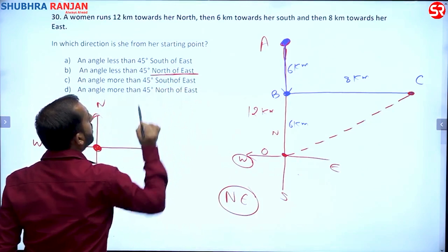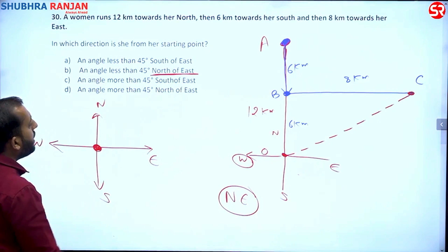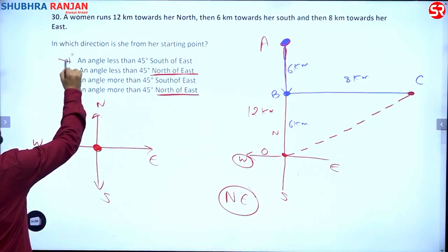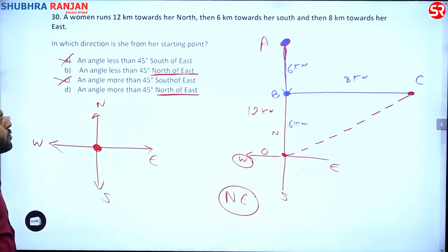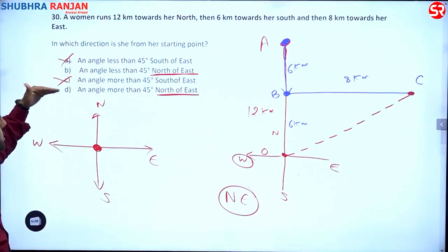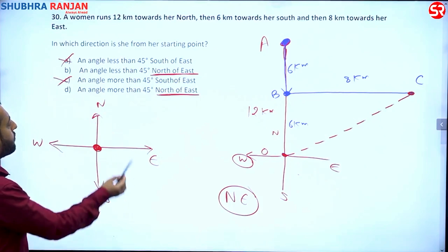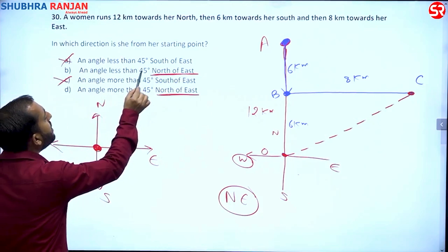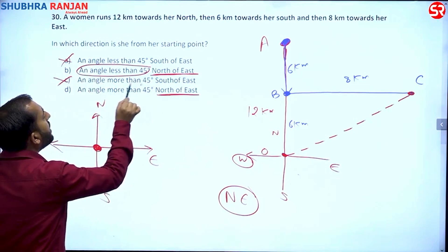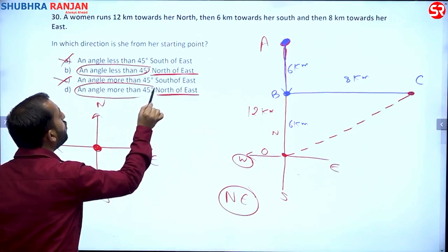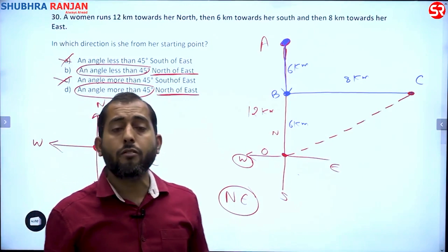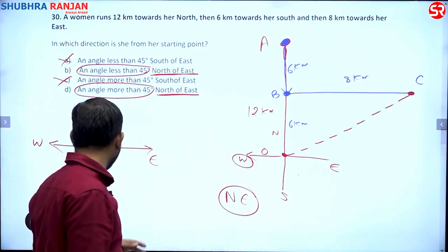In option B there is 'north of east' and in option D there is also 'north of east,' so options A and C are eliminated since the examiner talks about south of east there. The difference between B and D is angle less than 45° versus angle more than 45°. So how do we judge whether it will be less than 45° or more than 45°?